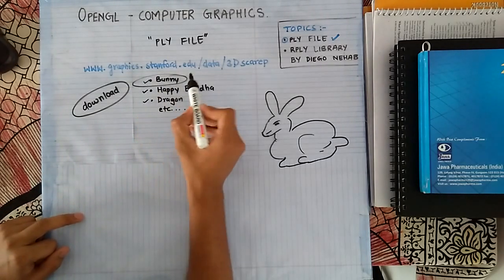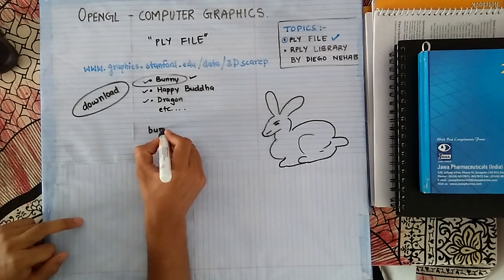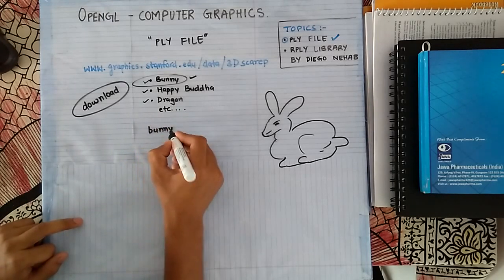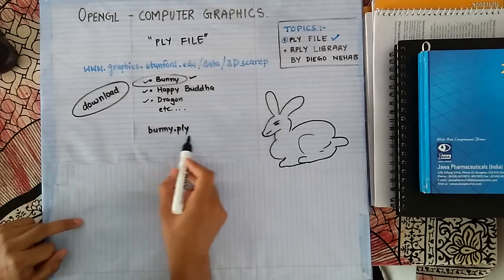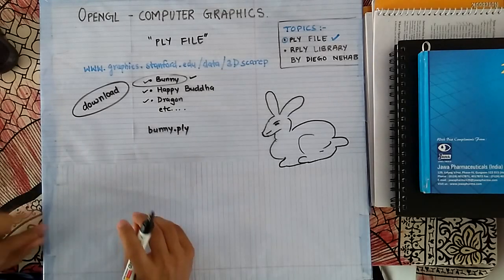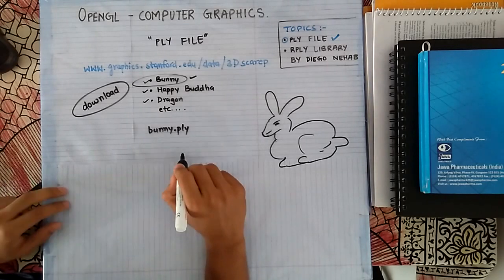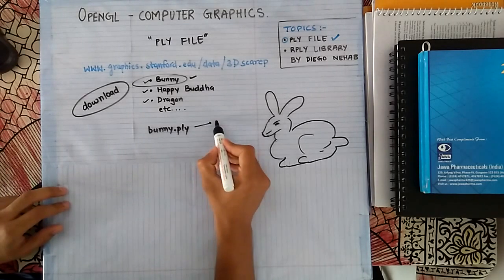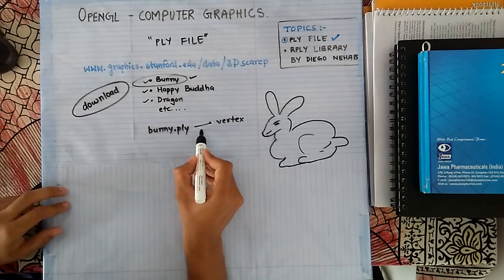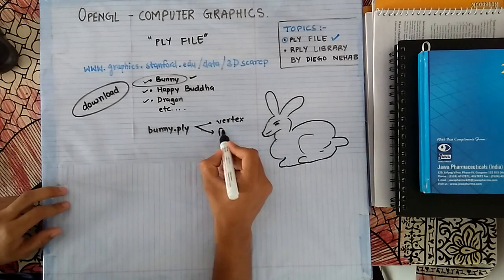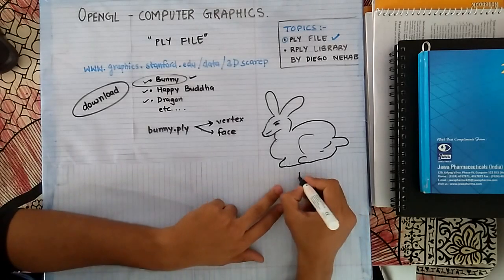The one we are going to study in this video will be bunny.ply. You can download this file — I strictly recommend you download and have a look at it. Don't be frightened by the big numbers and the size of this file; it just contains vertices and faces as we have seen in our previous lecture.